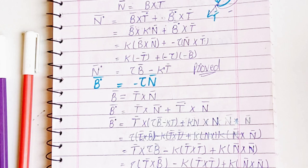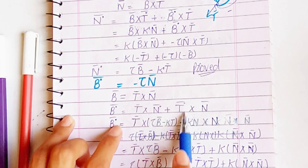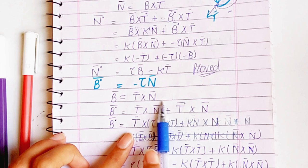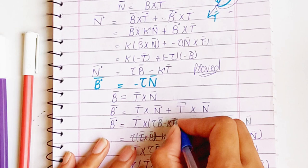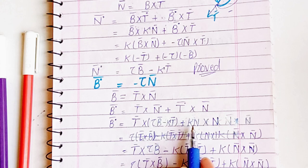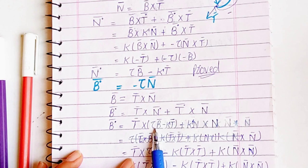We have seen that B is T cross N. When we take the derivative of B with respect to S, we have T cross dN/ds plus dT/ds cross N. After substituting the known derivatives, dN/ds equals torsion into binormal vector minus curvature into tangent vector, and dT/ds equals kappa N. The term N cross N equals zero, and T cross torsion B gives the remaining terms, completing the proof.